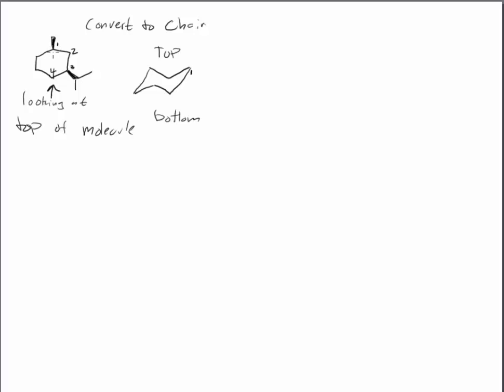So the substituent at carbon one is pointed up towards the top. And so I want to put my two bonds here. The top upward facing bond is where my methyl goes. And the hydrogen that wasn't put in, this hydrogen right here, is now in a downward facing equatorial bond.